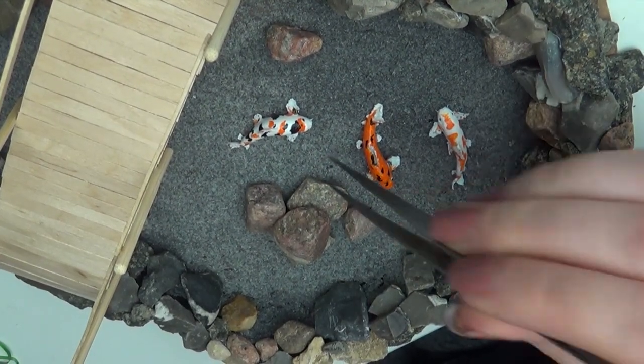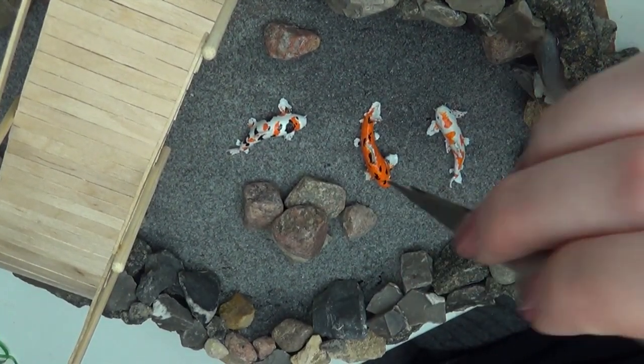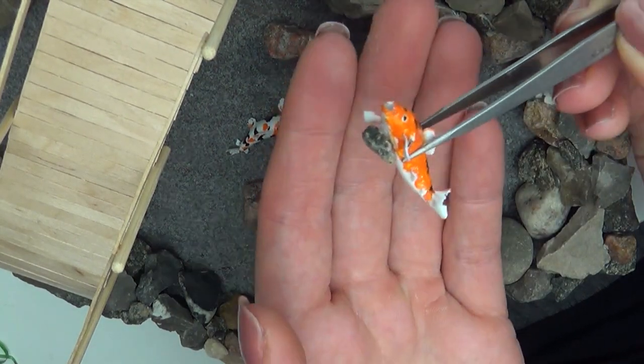Now arrange your fish the way you want them and glue them in place so they don't move with the resin. I propped one fish up on a small stone so it looked like it was going to the surface.